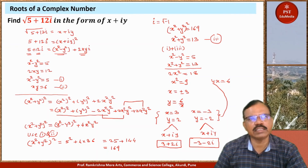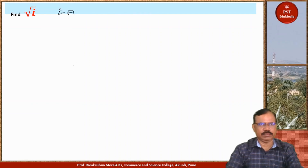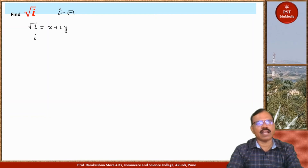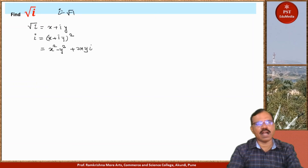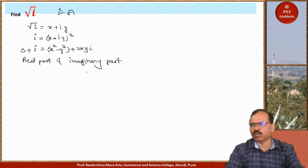This simple method works well for finding square roots of complex numbers. Now we find the square root of i (iota), where i equals root of minus 1. Setting root of i equal to x plus iy, squaring both sides gives i equals x squared minus y squared plus 2xy times i. Writing i as 0 plus i and comparing real and imaginary parts on both sides.